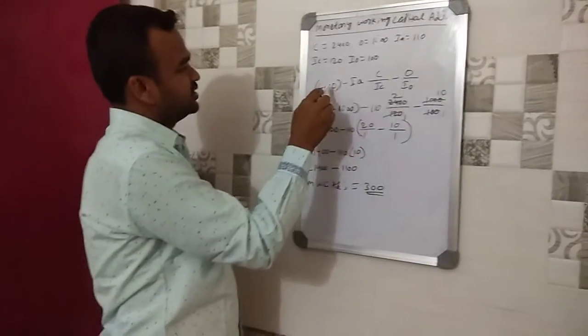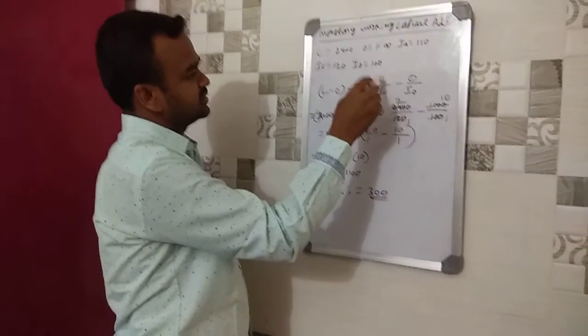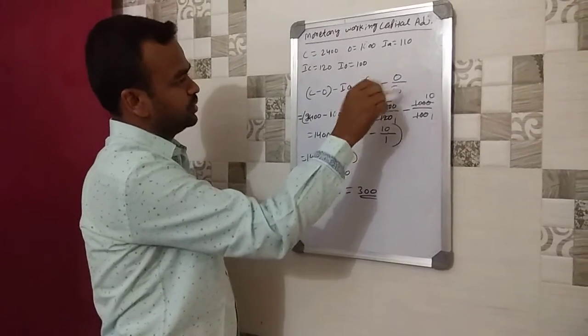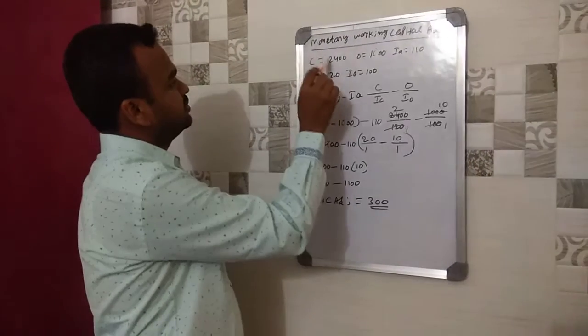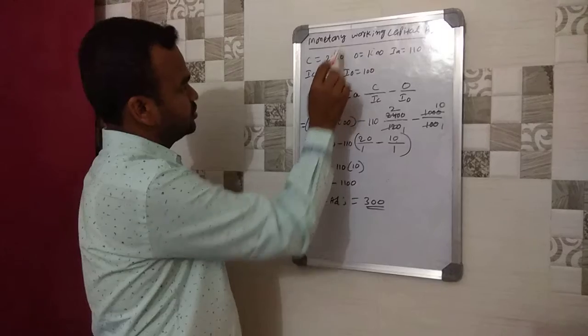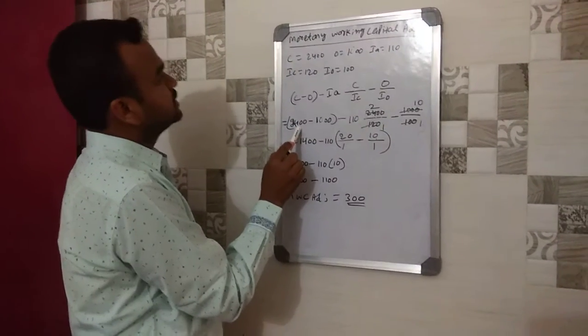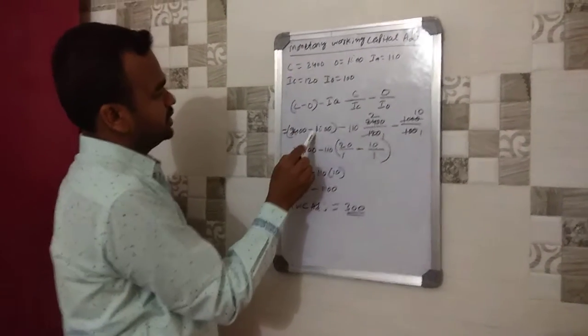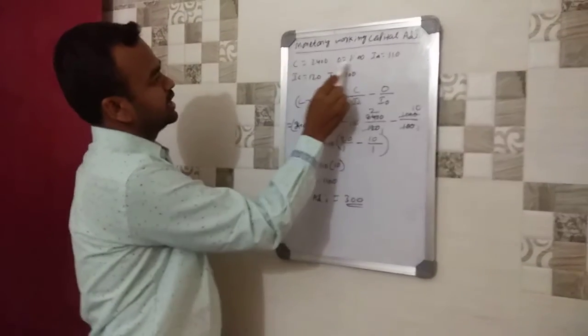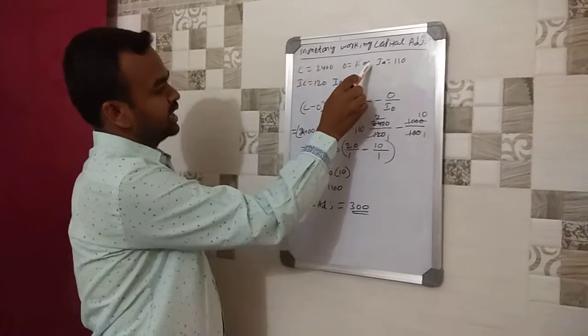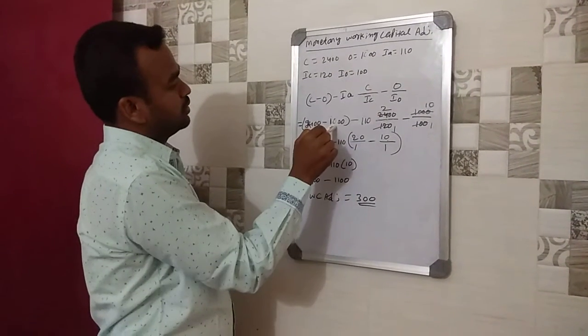So the formula is C minus O minus IA times C divided by IC, minus O divided by IO. C means closing working capital, that is 2400. O means opening working capital, that is 1000.